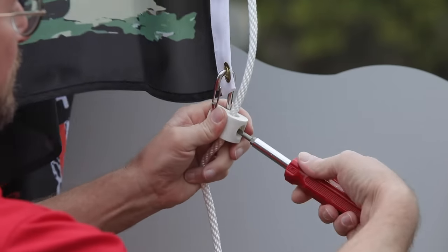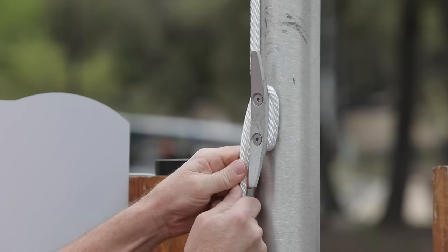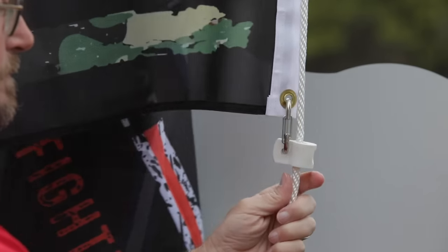Tighten the second zip clip to the halyard, unwrap the halyard from the cleat, and raise your flag to full staff.